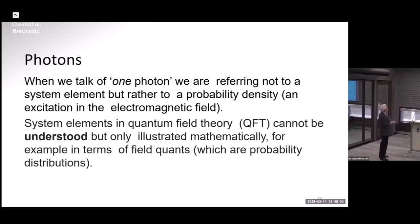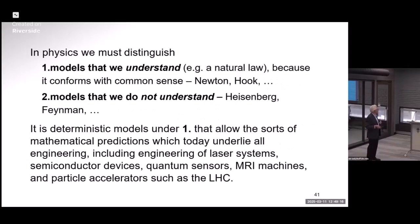There's something very intriguing about this thesis that we can't understand quantum physics. When we're talking of one photon, we're not referring to an element of a system. We're referring to a probability density. We can distinguish models that we understand, classical physics, from models that we don't understand, much of contemporary physics, according to Feynman, and he was no fool.